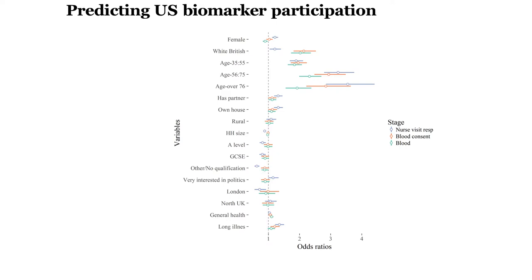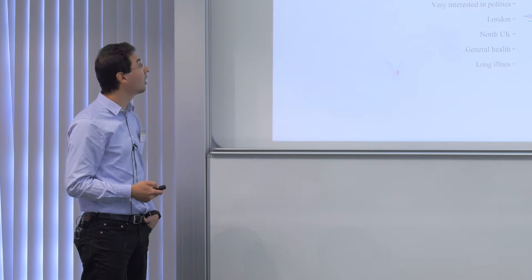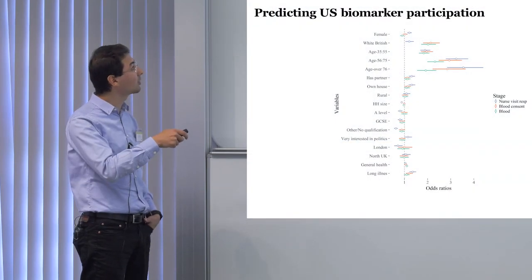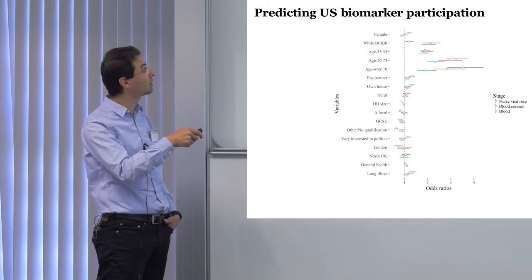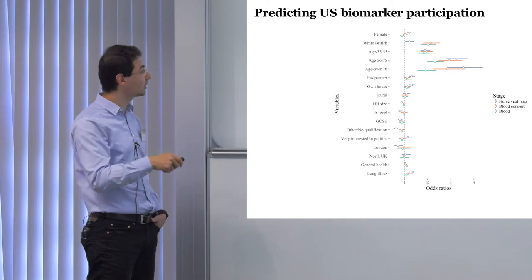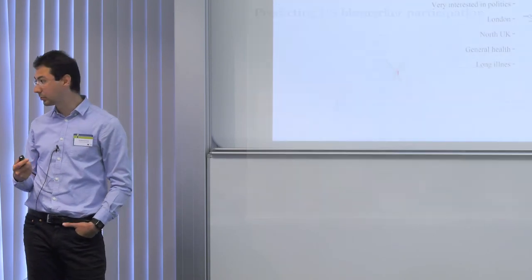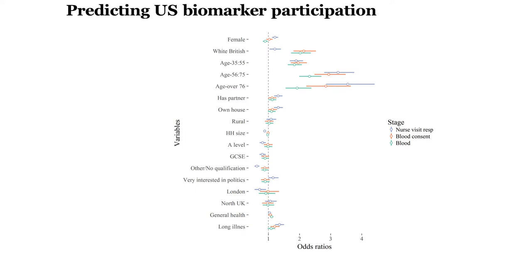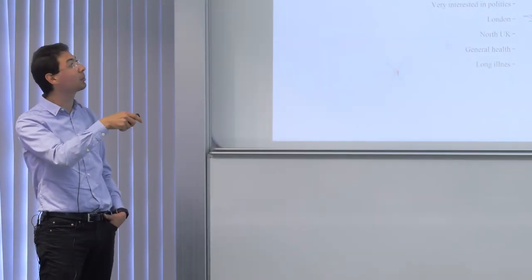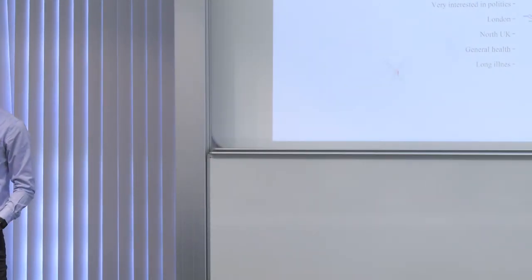We expect older people to tend to participate more compared to younger people, which we find often. Having a partner is important for having a nurse visit but maybe not for the other two stages. Being in London makes the nurse visit harder, as you'd expect. Having a long-term illness makes you more likely to participate. We could use information like this in multiple imputation or weighting to compensate for missing data. One key insight is that we have different missing data patterns across stages and should account for this when compensating for missing data.